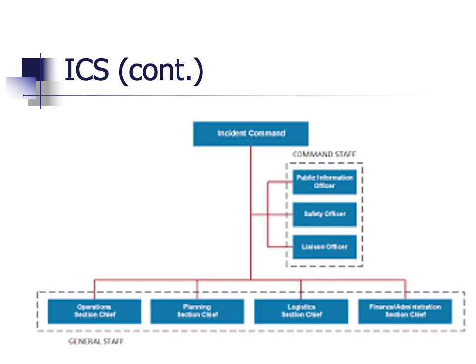The structure of ICS includes several components, whether at the command or general levels. Incident command includes one or more leaders who work to direct the response operation. This could include one fire chief, multiple fire chiefs, or the leaders of police and fire departments from the same or different jurisdictions. The incident commander or commanders work with three other officers: one focuses on the sharing of information within the organization and with others, another concentrates on safety making sure that no responder is harmed or injured, and another collaborates with external departments, agencies, and organizations.